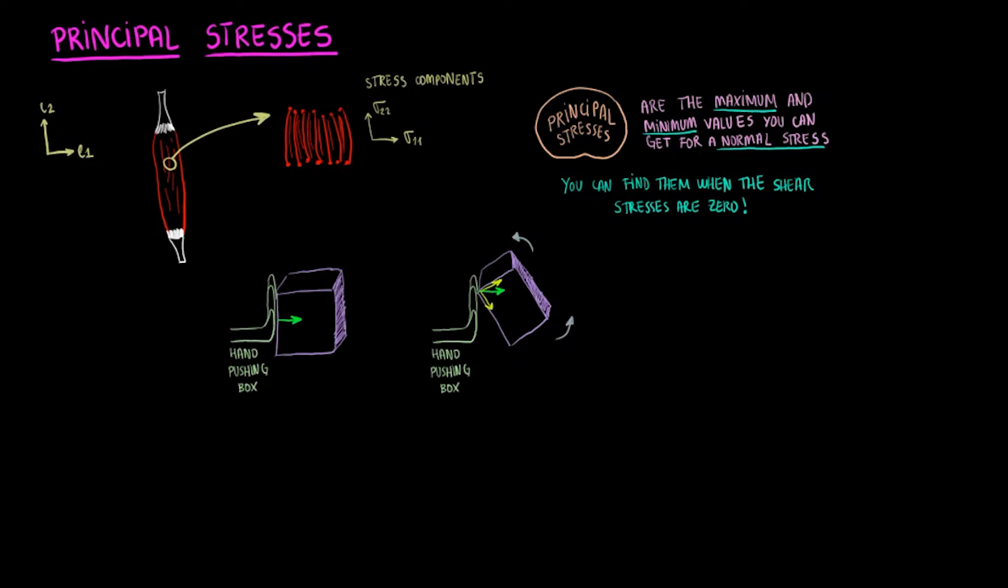When you apply the same force at an angle or at the corner between two faces, the normal component is smaller despite the force being the same. This results in a shear component or a component of stress parallel to the face. Now think about how a simple rotation of the box could get the normal stress to be its maximum value while the shear stress becomes zero.